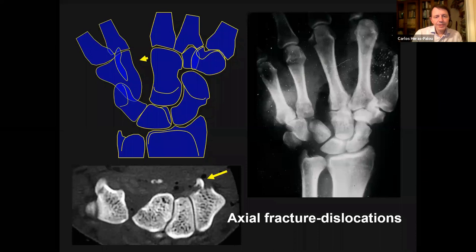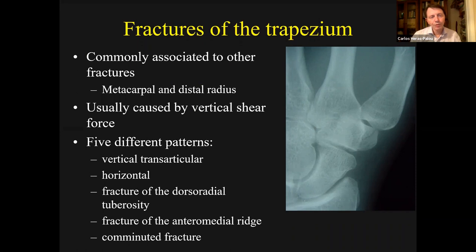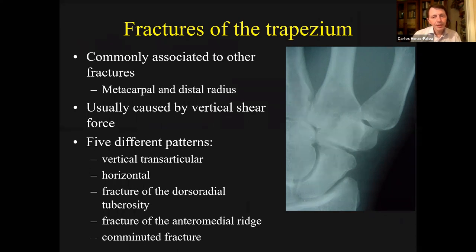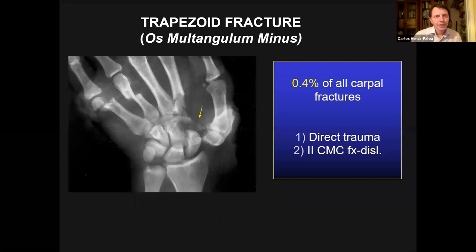Also remember that you can have these in the most severe injuries, like axial fracture dislocation where the hand is split and the transverse retinaculum pulls the ridge of the trapezium with the bones of the other side of the hand. Things to remember from fractures of the trapezium: they are commonly associated with other bone injuries. Always have a good look at the metacarpal and the distal radius. If people give you just a radiograph of the thumb, make sure you get the radiograph of the wrist. Most of them are caused by vertical shear force and there are five patterns. Remember to look for the fracture of the anterior middle ridge.